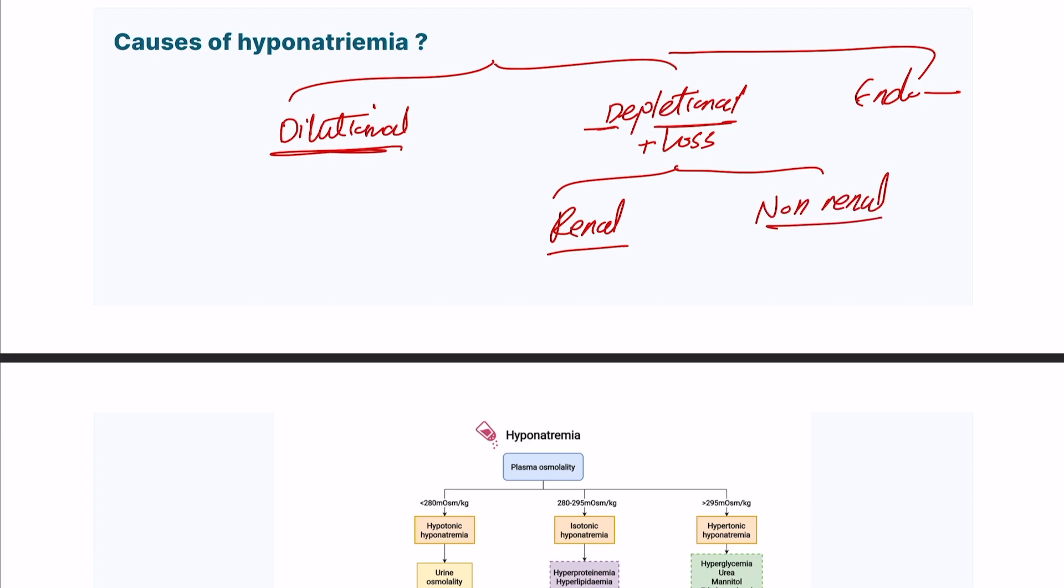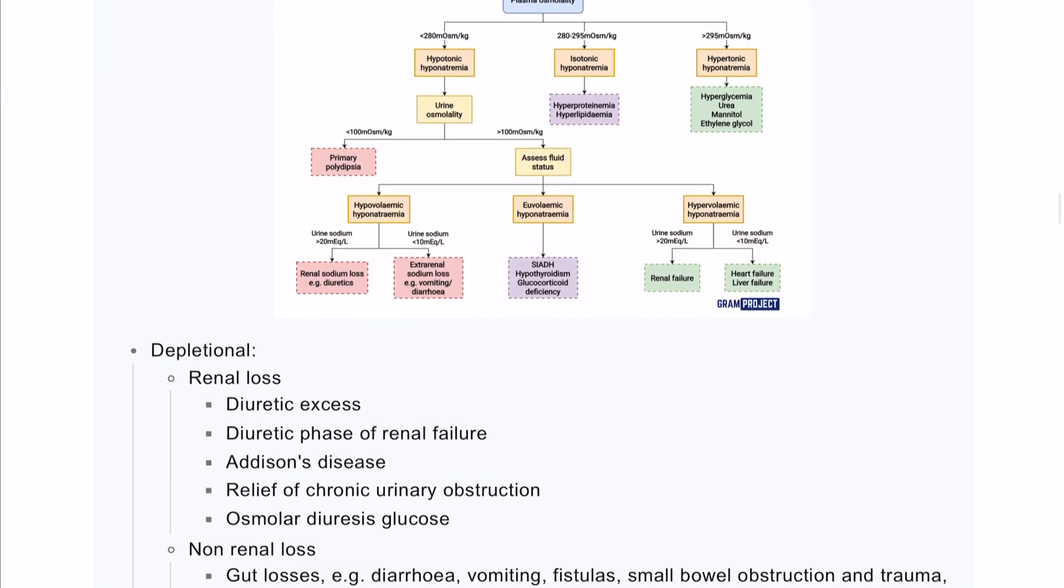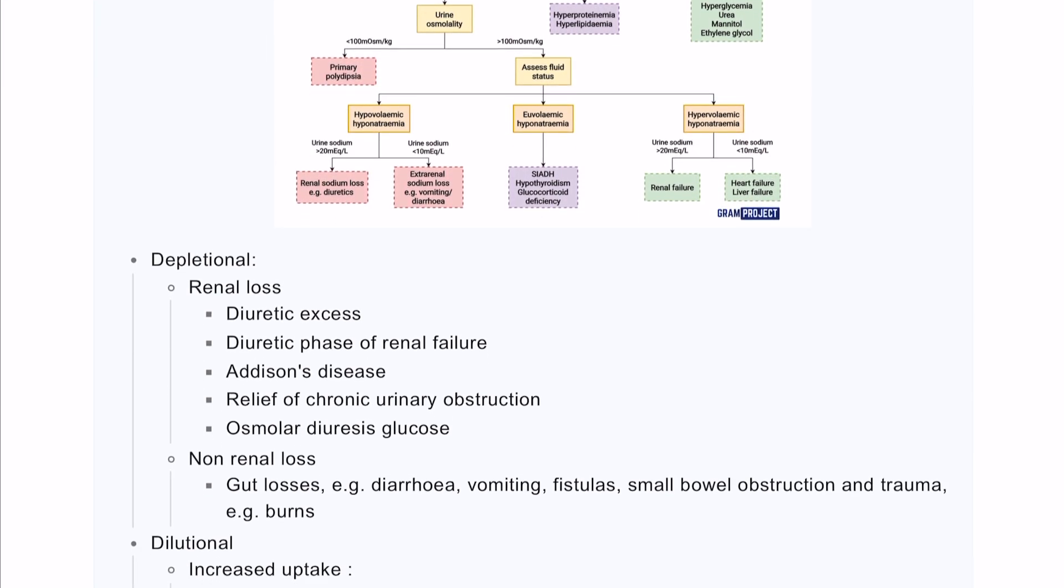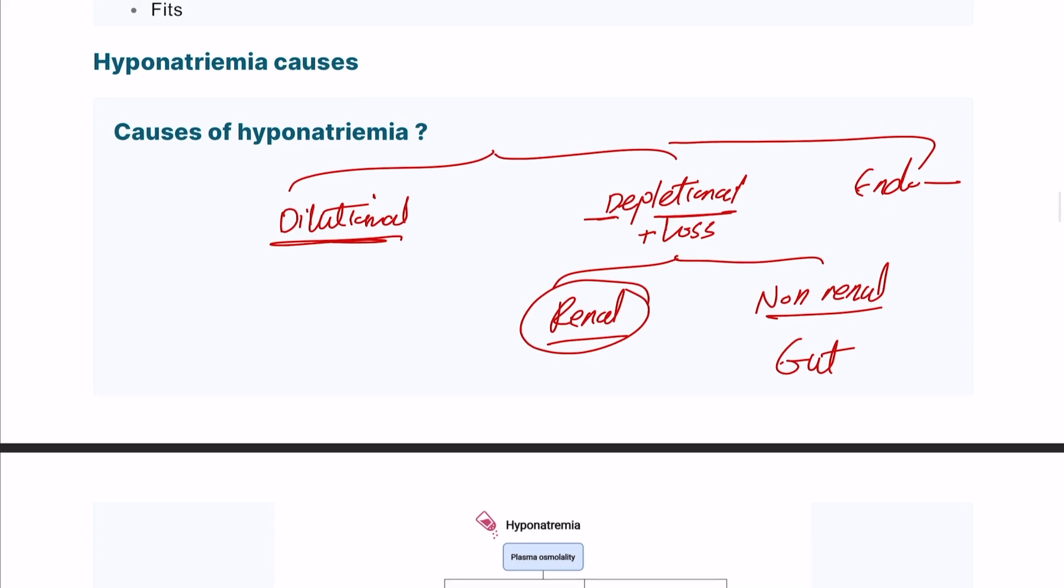Non-renal loss would be through the gut in diarrhea and vomiting. Renal loss can happen in the diuretic phase of renal failure or giving the patient diuretics such as thiazide medication, spironolactone, or mannitol. Also, chronic urinary obstruction and osmotic diuresis can lead to this.